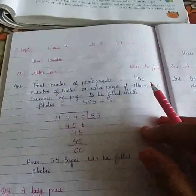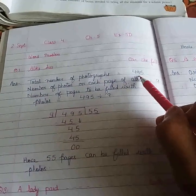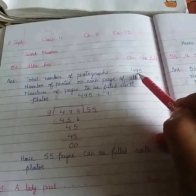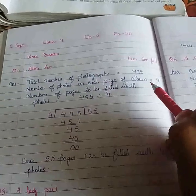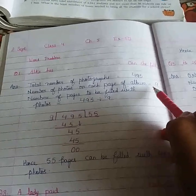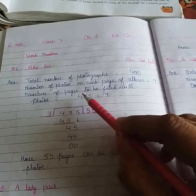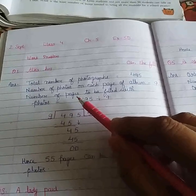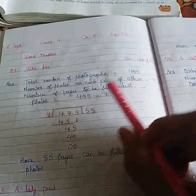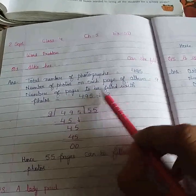See here question number 1. Here it is given that Alka wants to put 495 photographs in an album. So total number of photographs is 495. In the album, on each page 9 photographs can be placed. Now we have to find out how many pages are there in the album. To find out the number of pages, we have to divide. So here total number of photographs is 495, number of photos on each page is 9, and we have to find out number of pages to be filled with photos.